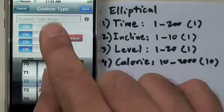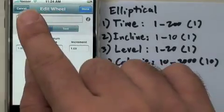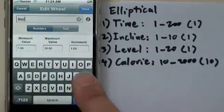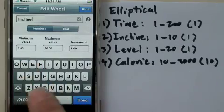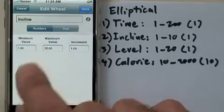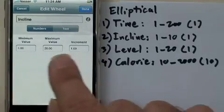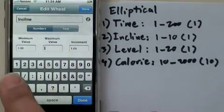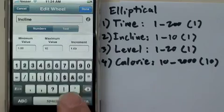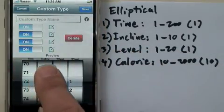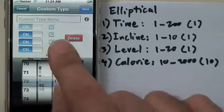Let's define the second wheel, incline. This is also a numeric wheel. I can define 1 to 10, increments of 1 is the default. Done. We see incline is defined here, 1 to 10.